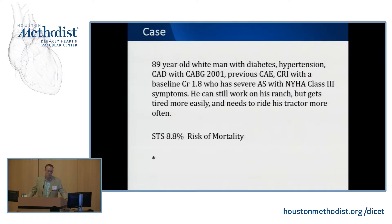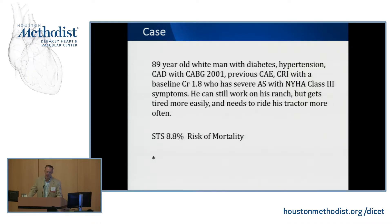A typical case would be an 89-year-old man with prior bypass surgery, renal disease, and vascular disease who has aortic stenosis but is fairly independent — still working and going to his ranch daily, though getting more fatigued and short of breath. His calculated STS score is 8.8% risk of mortality for surgical aortic valve replacement, making him a typical TAVR patient, though this will shift as we move toward lower-risk patients.